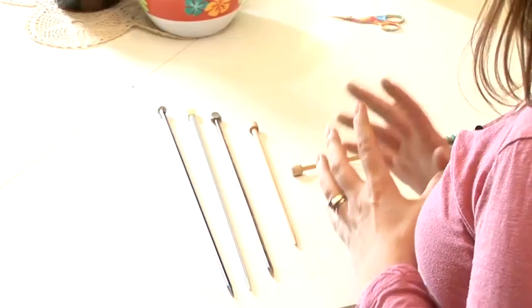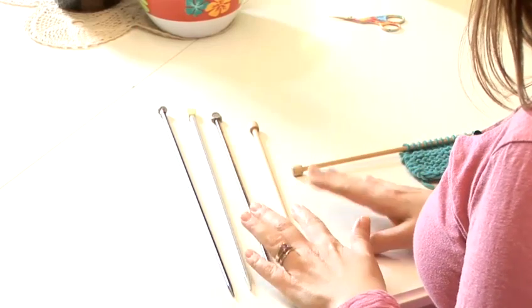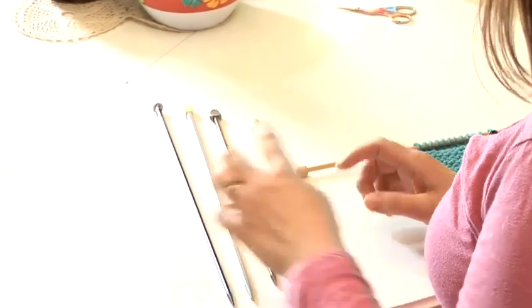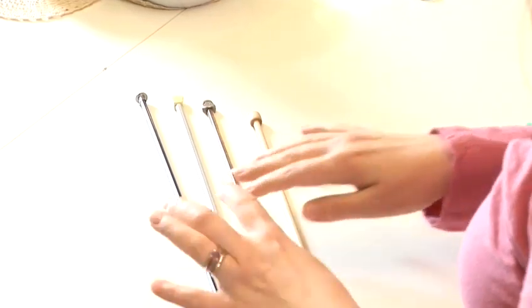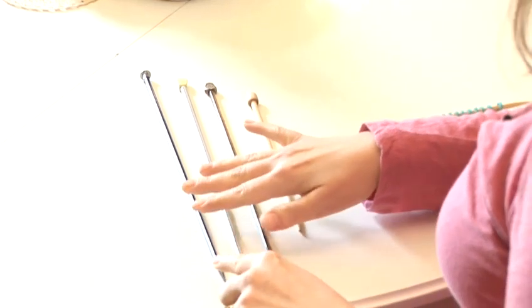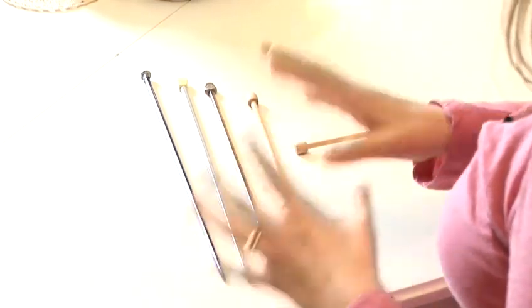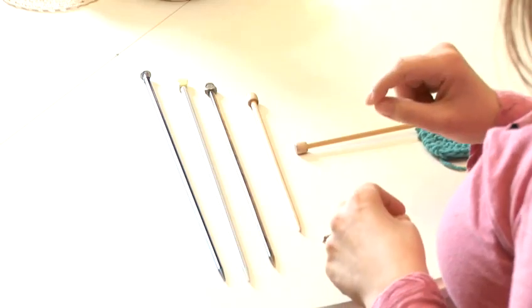Knitting needles come in several different materials, and I'll tell you briefly about the others before we talk about bamboo needles. You can get metal needles. They tend to be very smooth and silky, and the tips are very sharp, so people call metal needles fast, meaning you can knit quickly with them because the yarn slides off them easily.